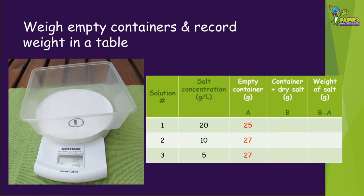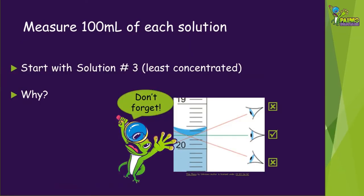The next step in our process is to construct our salt lake puddles. First, we're going to weigh our shallow containers when they're empty and dry. If you don't have scales, you can skip this part. Make sure your containers are labelled with the solution numbers. To make the puddles, measure out 100 millilitres of the solutions, remembering to read the scale accurately. We're going to start with the least concentrated, solution three.